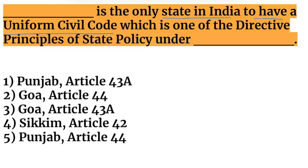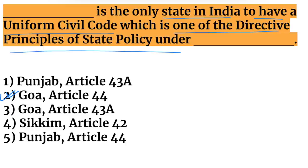Next question: which is the only state in India to have a Uniform Civil Code, and under which article does it fall? Goa is the only state in India with a Uniform Civil Code, which comes under Article 44. The Uniform Civil Code means all people, irrespective of religion, follow the same personal laws such as marriage and adoption.